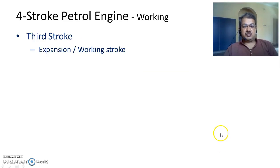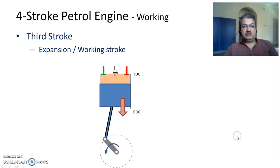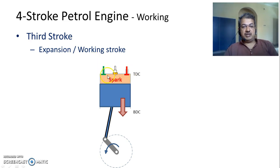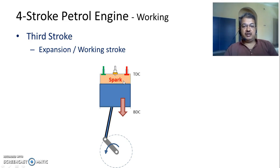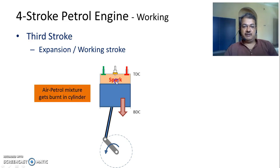The third stroke is called the expansion stroke or working stroke. At the end of the compression stroke, we have the compressed air-petrol mixture at very high pressure and temperature. At the beginning of this stroke, a spark is initiated by the spark plug. The air-petrol mixture, due to compression at high pressure and high temperature, will have reached almost a gaseous state — similar to when you have a gas and introduce a spark through a lighter, it immediately catches fire. In a similar way, the air-petrol mixture gets burnt inside the cylinder, forcing the piston to move downward.